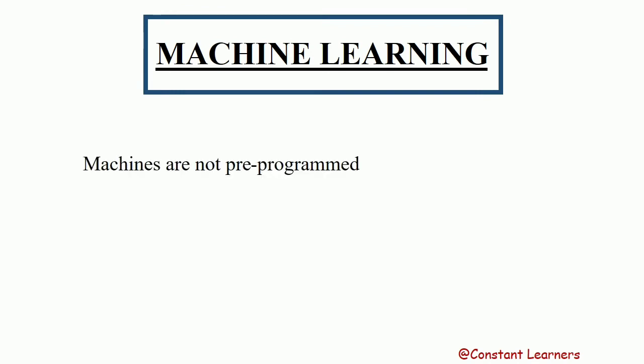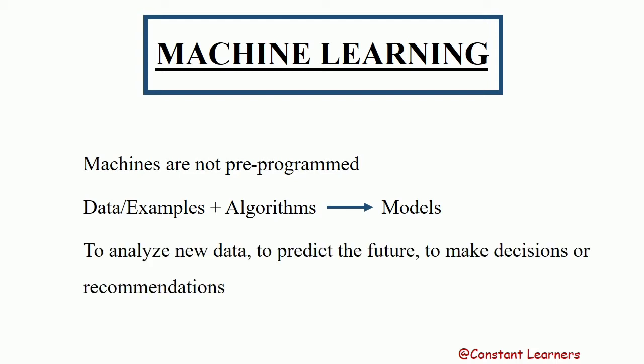Machine learning is the field where machines are not pre-programmed. Rather, they are fed with some data — some examples — and machines use these examples along with some algorithms to create models. That is how machines are prepared to analyze new data, predict the future, or make decisions and recommendations. You can check out the linked video where I've explained the introduction, places where machine learning is used, how machines learn by themselves with time and experience, and its types.